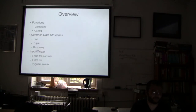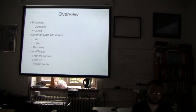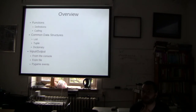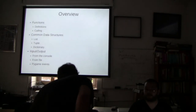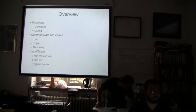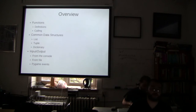Today we're going to go over functions, common data structures, and input and output. For functions, we're going to talk about defining our own functions and calling functions — you guys have done this already. The common data structures we're going to cover are the main three in Python: lists, tuples, and dictionaries. Another name for a dictionary is a hash table. For input and output, we're going to talk about how to write things to the console, read things from file, and how to do Pygame events so you can start adding keyboard or mouse input to your programs.